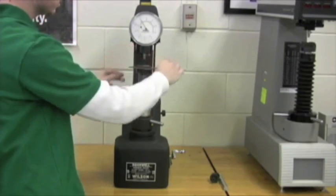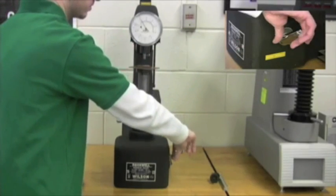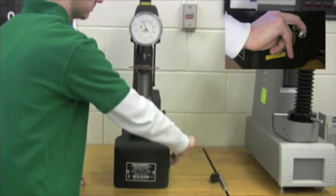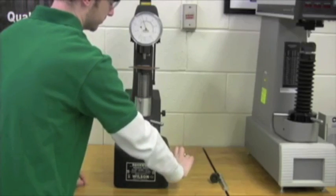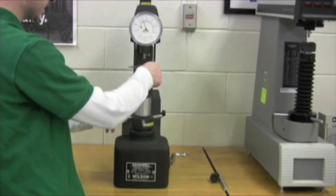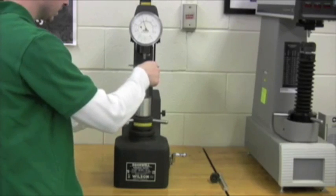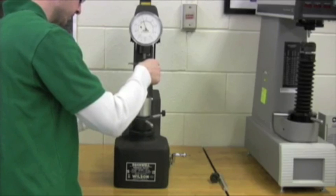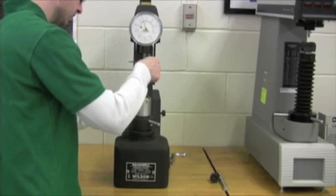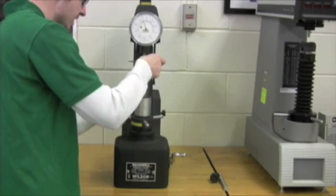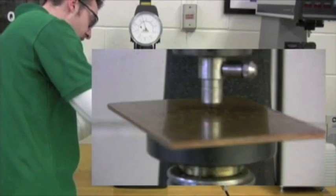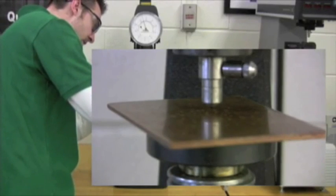Now first thing we want to do, is take our hand brake, pull it back like that. And we're going to take our hand wheel, and we're going to tighten it up. Let's bring it this way. And we're going to want to make sure that we don't have any of the divots touching the penetrator.